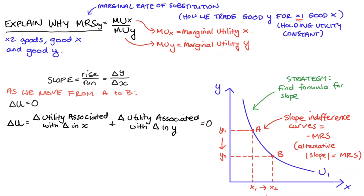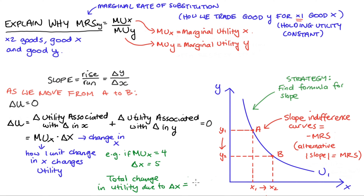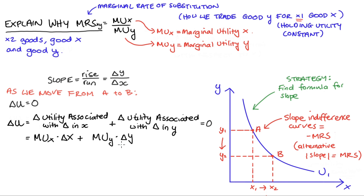We can rewrite this more succinctly. The change in utility due to our change in x can be thought of as the marginal utility of x multiplied by our change in x. The marginal utility of x tells us how a one-unit change in x affects the amount of utility we have, and we multiply that by how much x actually changes. For example, if our marginal utility of x equals four, then when x increases by five units, the total change in utility due to x is four times five, which is 20. Similarly, the change in utility due to y equals the marginal utility of y multiplied by the change in y. The sum of these two changes must equal zero.